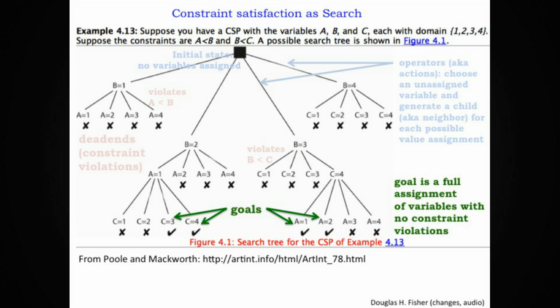Goals in this framework correspond to the situation where all the variables, in this case A, B, and C, have been assigned with no violation of constraints. And so if you look at the case where B equals 3 down along the right, though not the far right, and then choose C equals 4, and then A equals 1, that path corresponds to a path that leads to a goal state, A equals 1, B equals 3, and C equals 4. None of the constraints are violated in that case, and so that's a goal state.